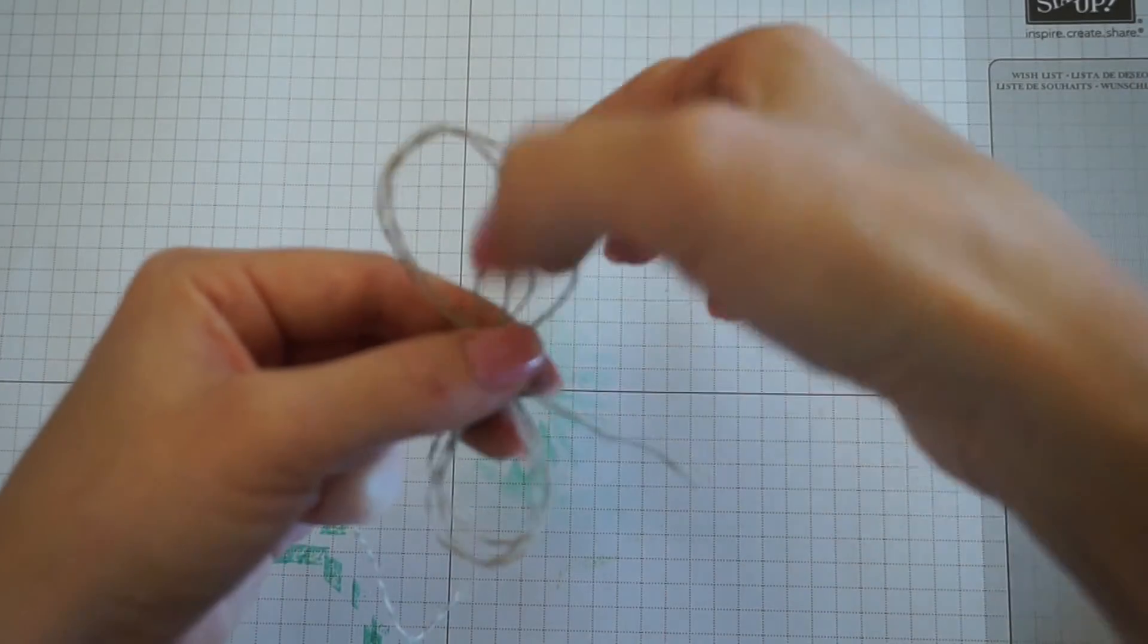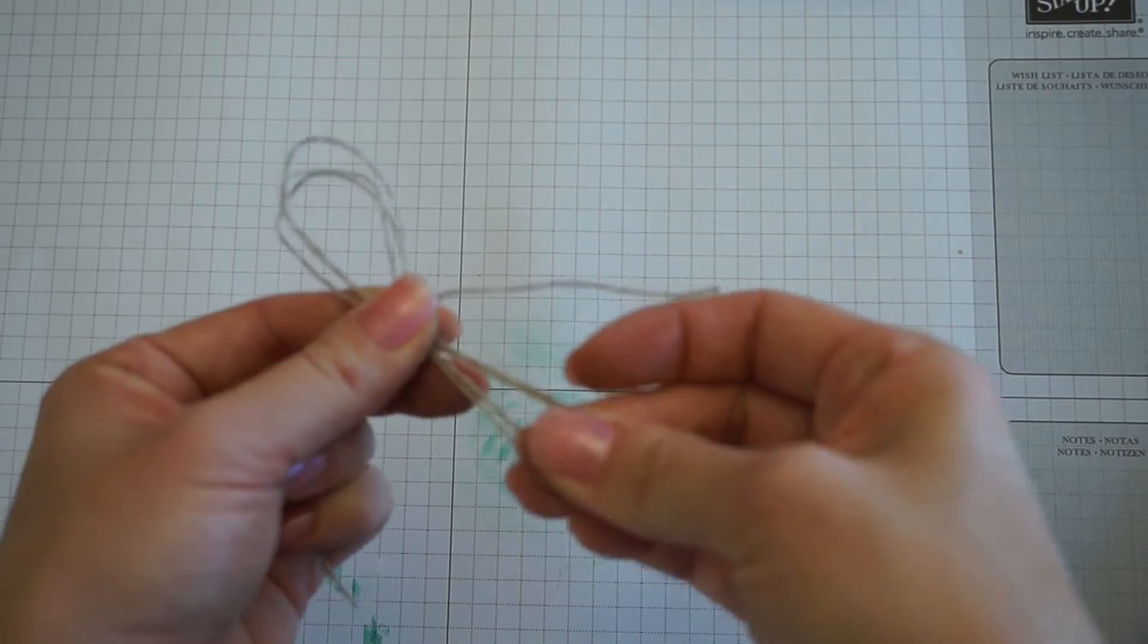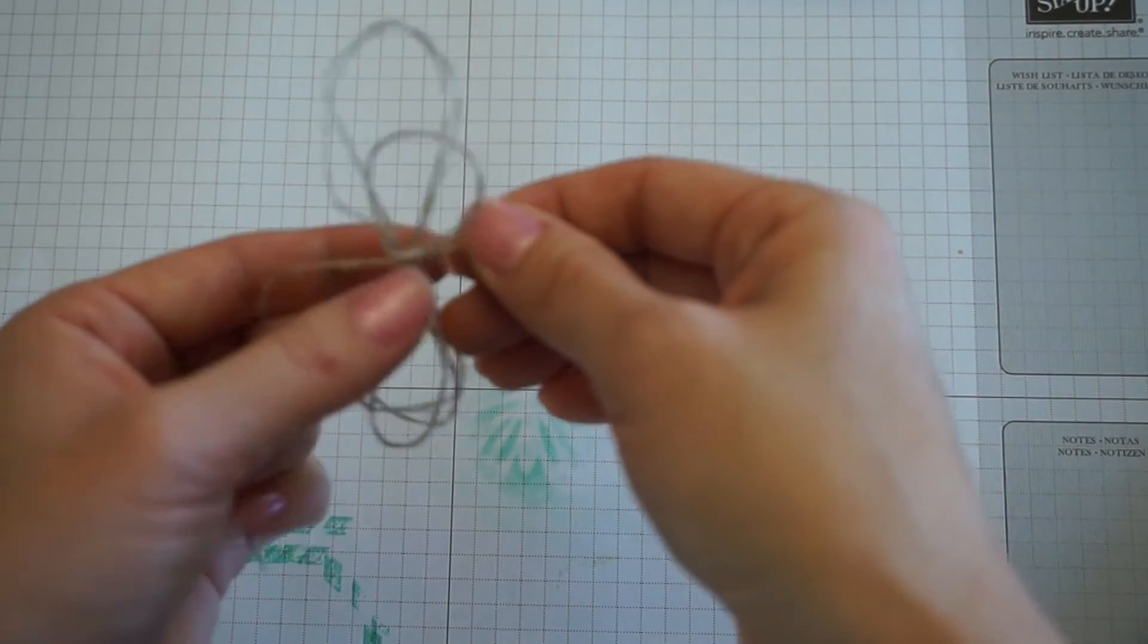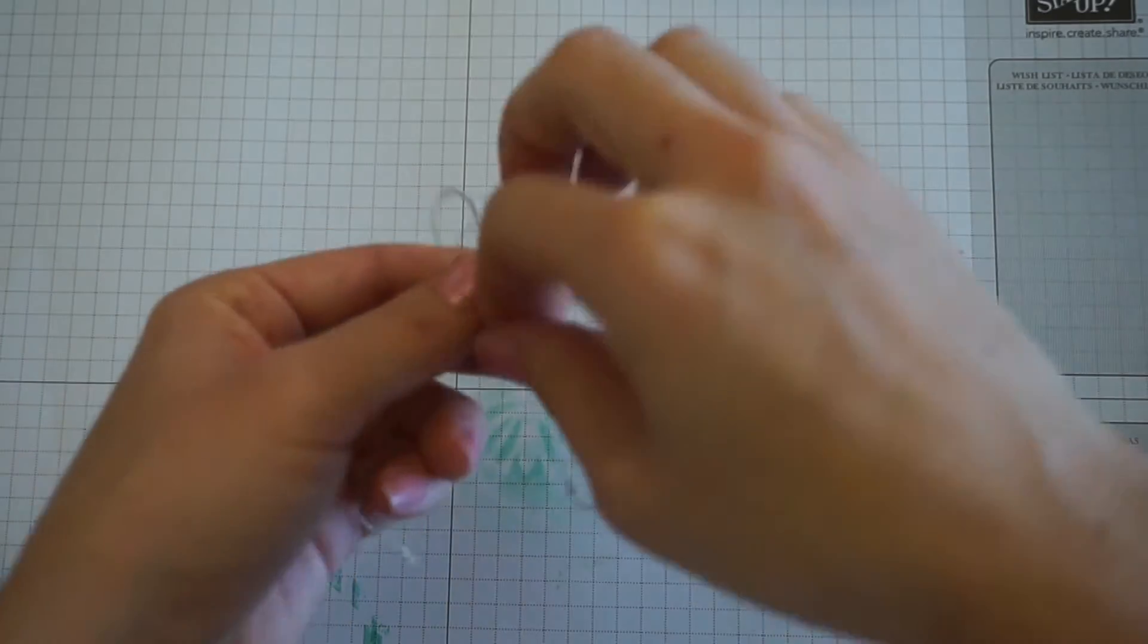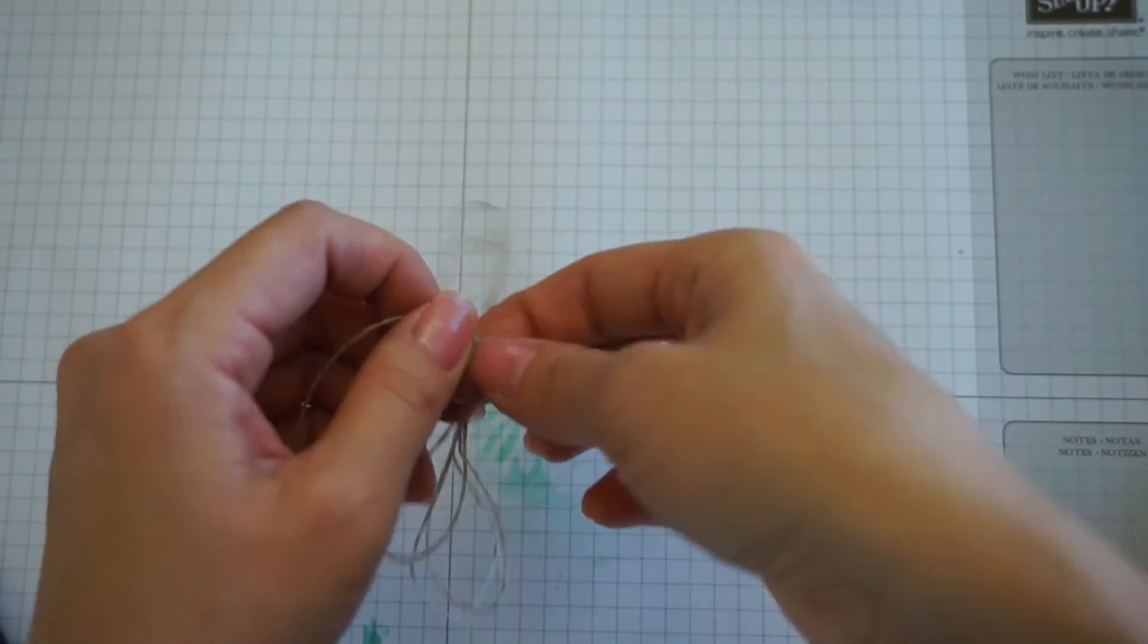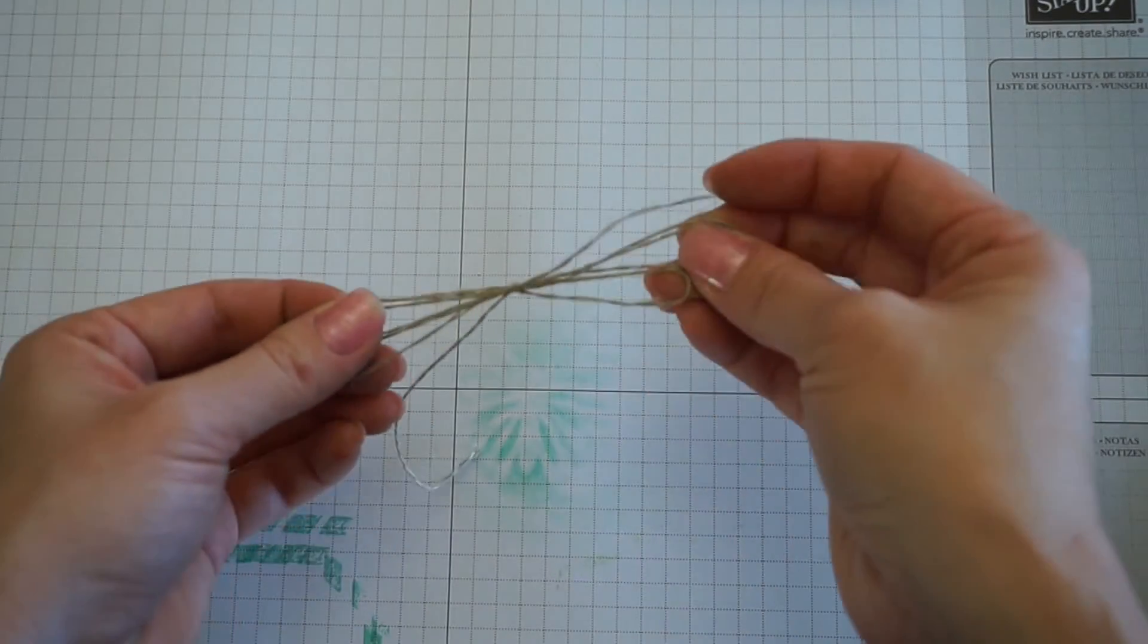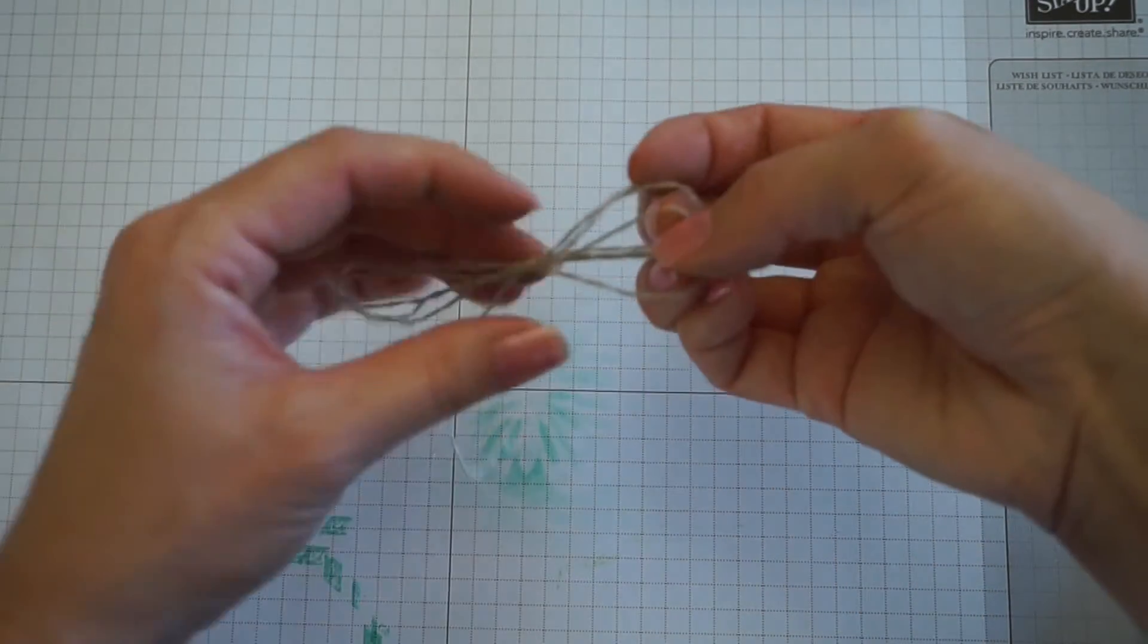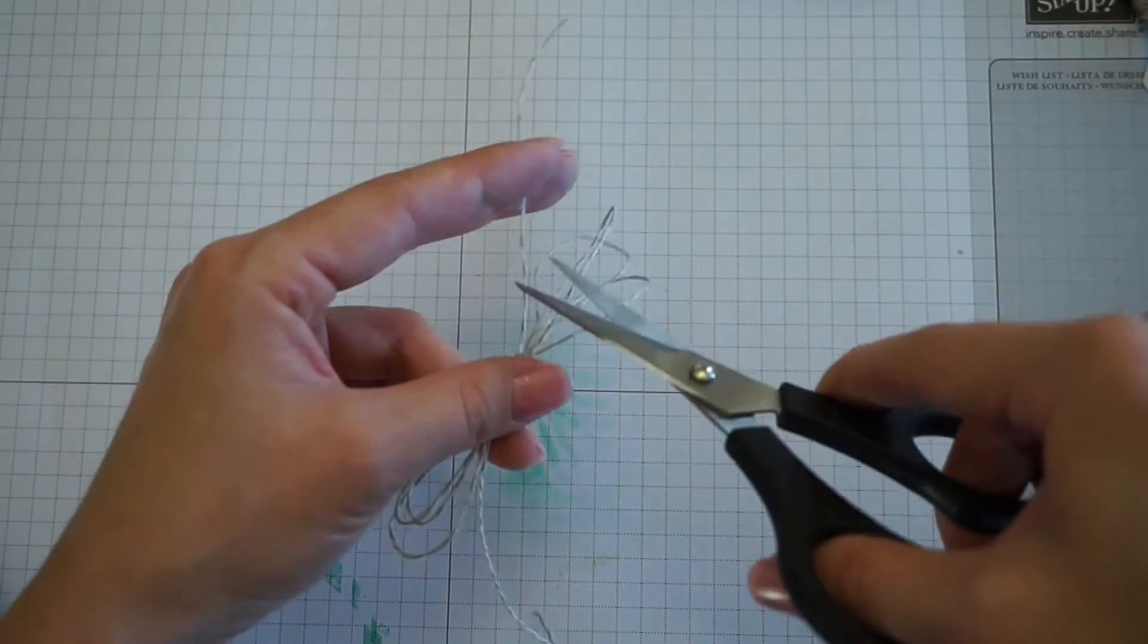Be careful because it does pull one of the edges. There you go, double knot it. You want to trim those edge pieces.